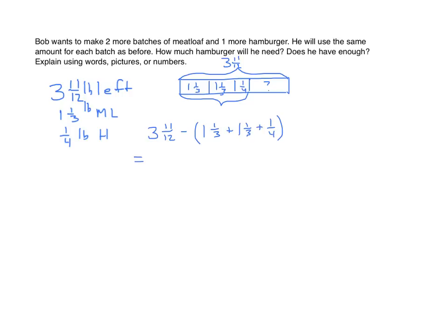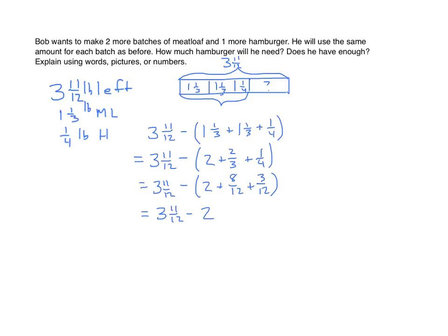It's easiest to deal with the numbers in parentheses with like denominators. So we have three and eleven-twelfths minus — I'll find the sum — one plus one is two, and one-third plus one-third is two-thirds. I'm going to decompose that plus one-fourth. Now we need to find the sum of the fractional parts. Our common denominator is twelve. Two-thirds becomes eight-twelfths, and one-fourth is three-twelfths. I can find the sum: two wholes and eight plus three is eleven-twelfths. And three and eleven-twelfths minus two and eleven-twelfths is one. So yes, he does have enough, and he has one pound left over.